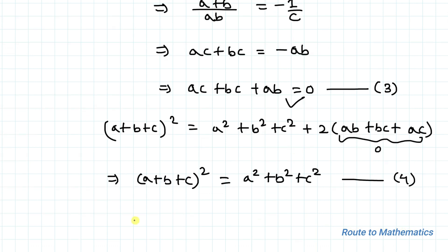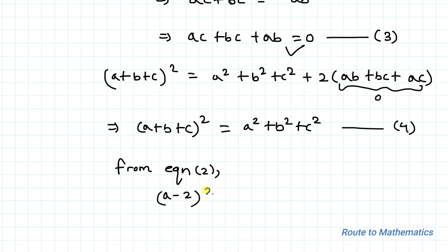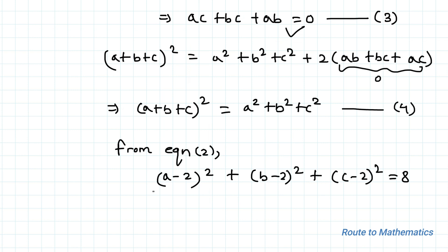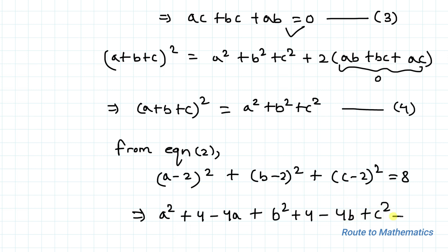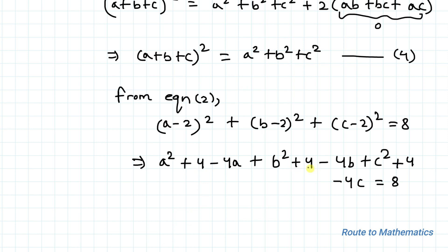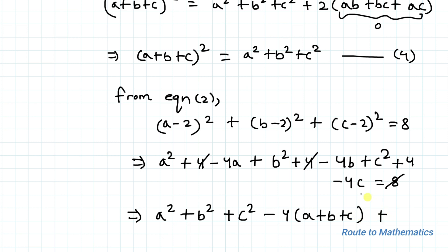Now considering equation 2: (a minus 2) squared plus (b minus 2) squared plus (c minus 2) squared equals 8. Expanding each bracket using the identity: a squared plus 4 minus 4a plus b squared plus 4 minus 4b plus c squared plus 4 minus 4c equals 8. The three 4s sum to 12; moving 8 to the left gives: a squared plus b squared plus c squared minus 4(a plus b plus c) plus 4 equals 0.